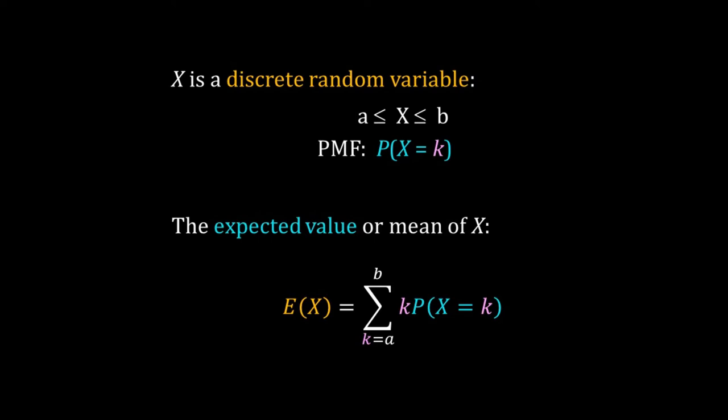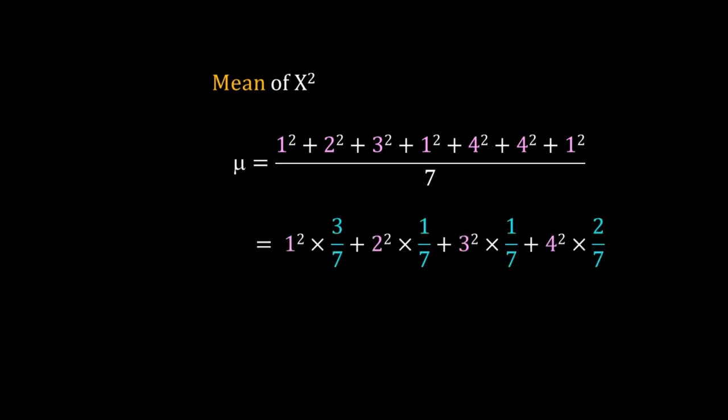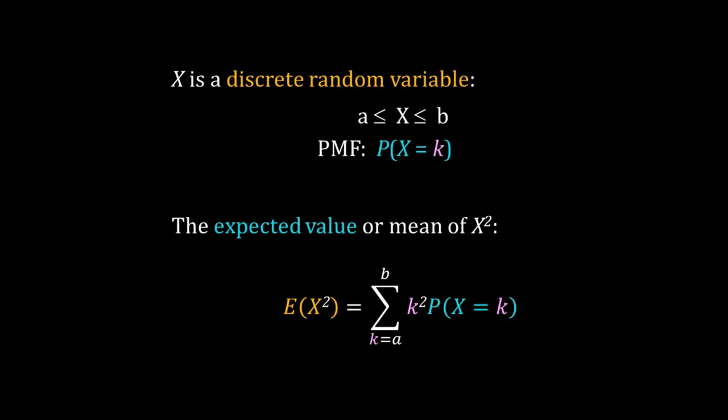Now calculate the mean of the square of those numbers generated by our machine. It would be the same as before, but we multiply the square of each number with its frequency. So if x is a discrete random variable, then the expected value of x² is the sum of k² times P(k) over all possible values of k, where k is a particular value or realization of x.